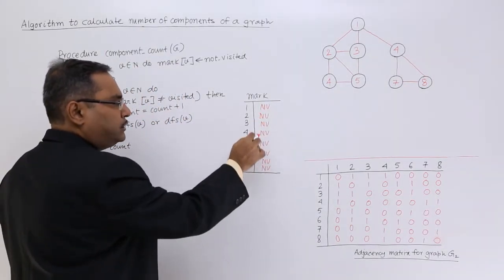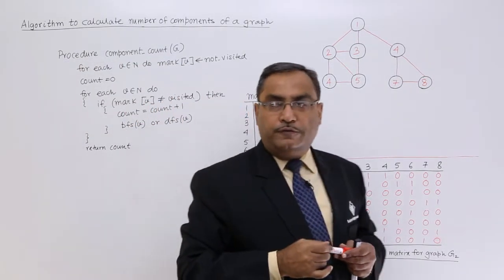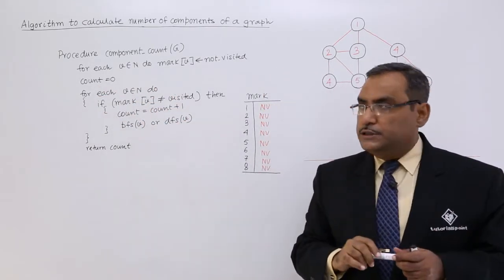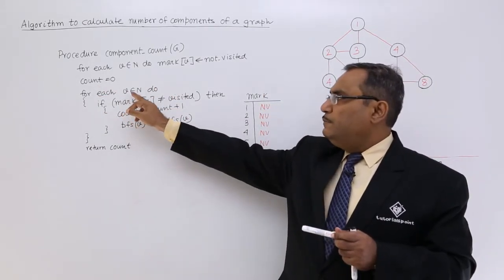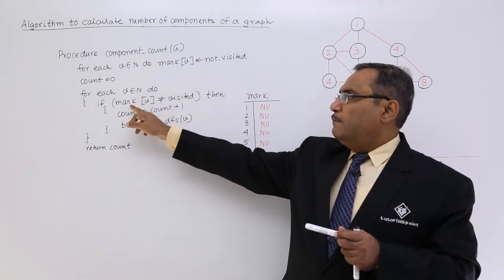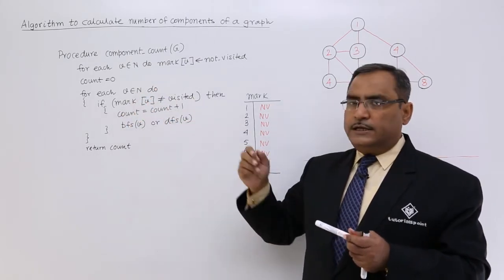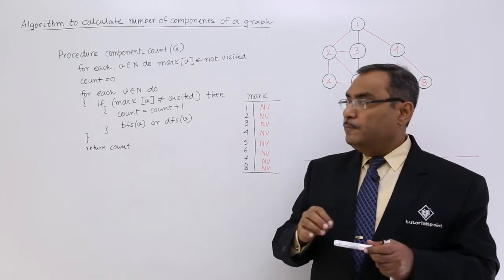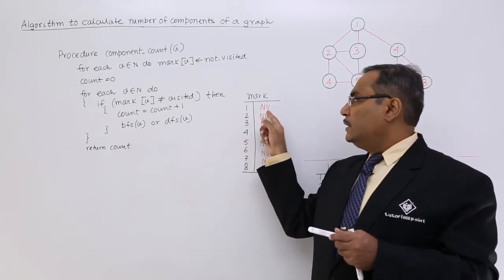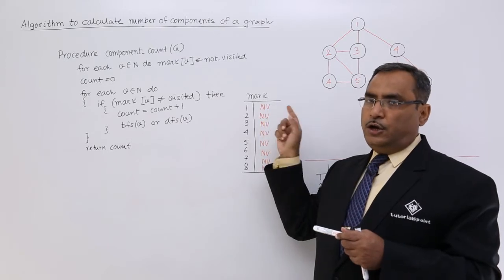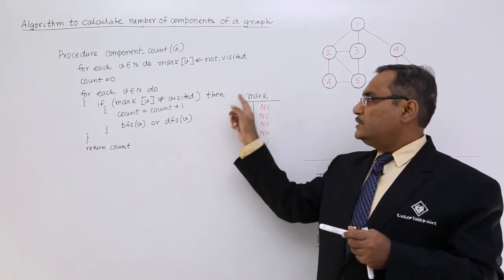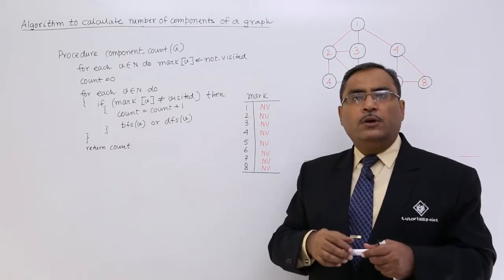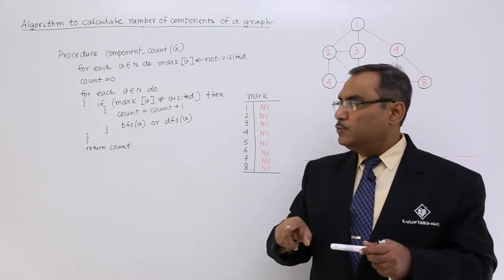All these locations are initialized with not visited. Count is set to 0 initially. For each v belonging to n, if mark of v is not equal to visited — we consider node number 1 as the start node, and node number 1 in the mark array is not equal to visited, so that condition is true.